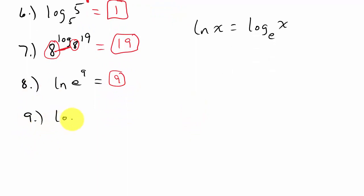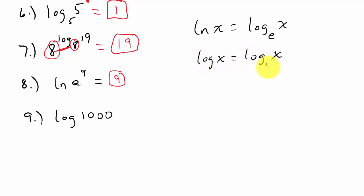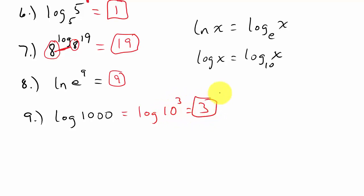One more: log of 1,000 with no base written. When there's no base, log is understood to be base 10. So we want to rewrite 1,000 as 10 raised to a power — 1,000 is 10 cubed. Since the base 10 matches, our answer is our exponent, which is 3.